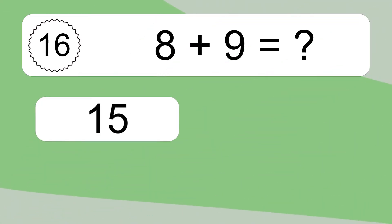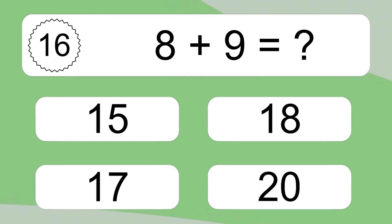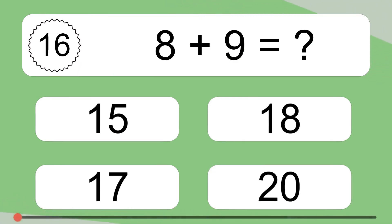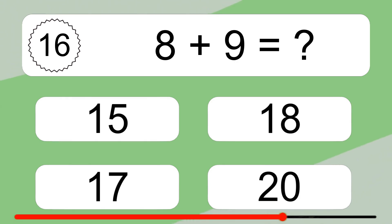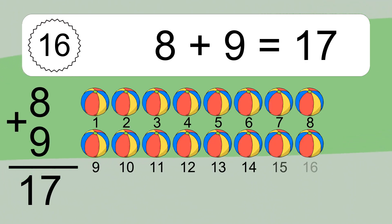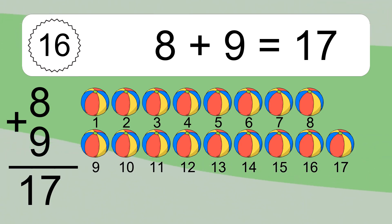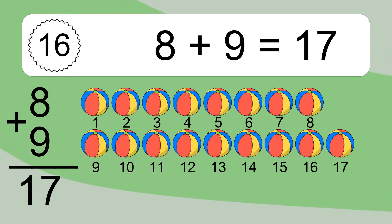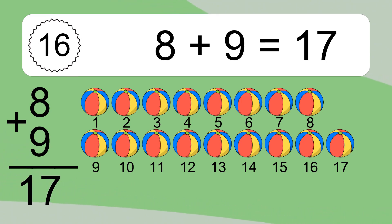8 plus 9 equals what? 8 plus 9 equals 17. Let's count it: 1, 2, 3, 4, 5, 6, 7, 8, 9, 10, 11, 12, 13, 14, 15, 16, 17.